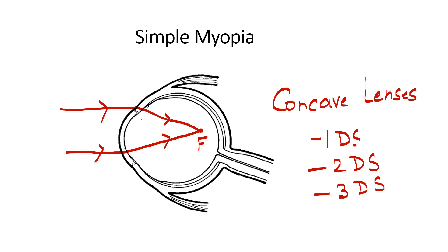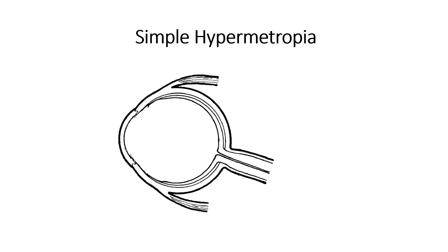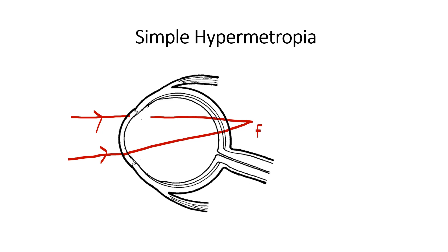In simple hypermetropia, the parallel rays of light coming from a distant object after refraction through the ocular media are brought to focus at a point behind the retina in the absence of accommodation, so the patient does not experience clear vision. The bending of the light rays is less than what the eyeball needs, and hence the rays converge behind the retina. In other words, this eyeball has less power than it needs.